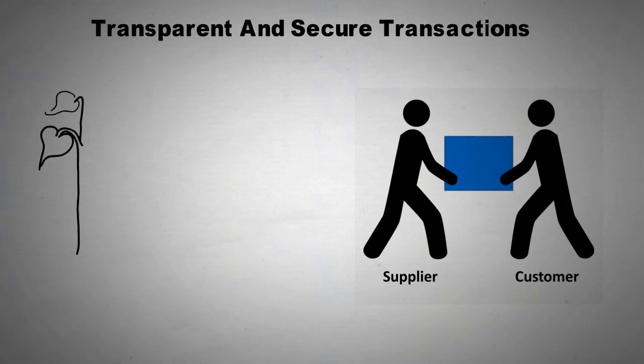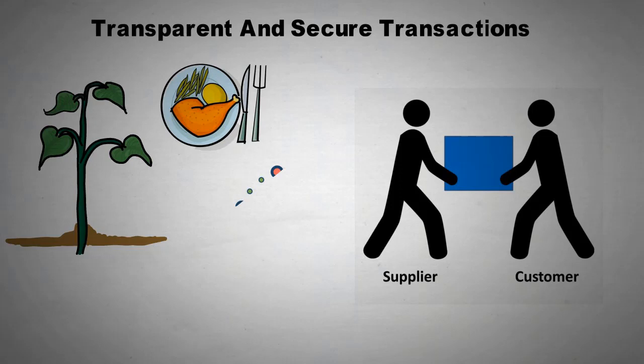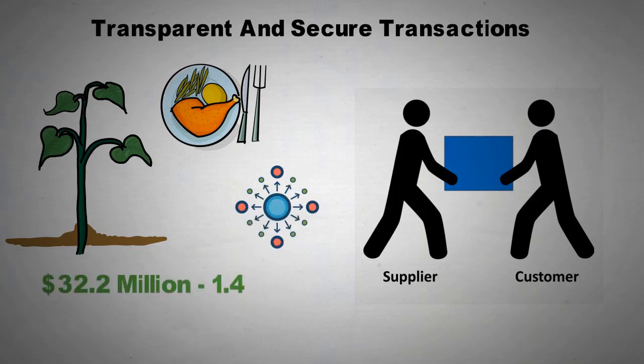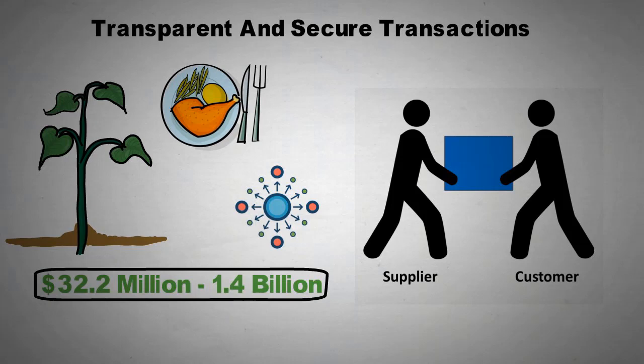Experts analyzing blockchain in the agriculture and food market forecast that the total market cap of decentralized projects within the area is set to expand from $32.2 million in 2017 to $1.4 billion by 2028.